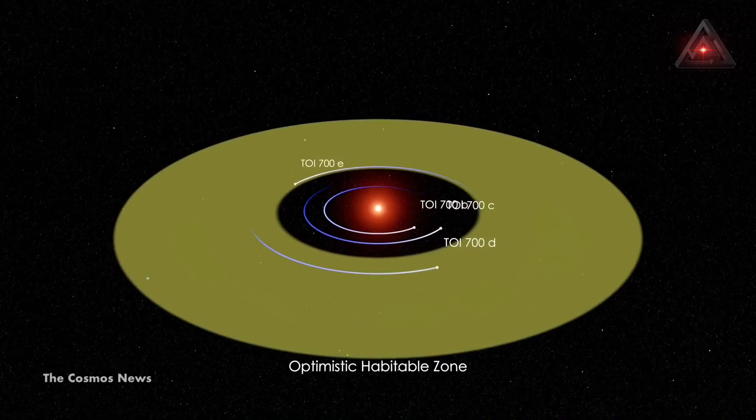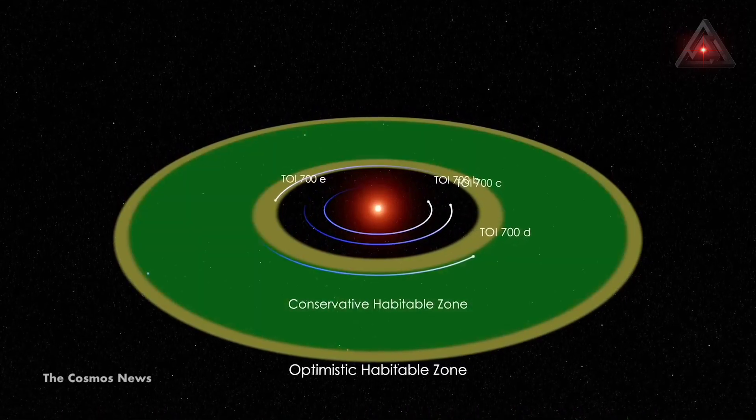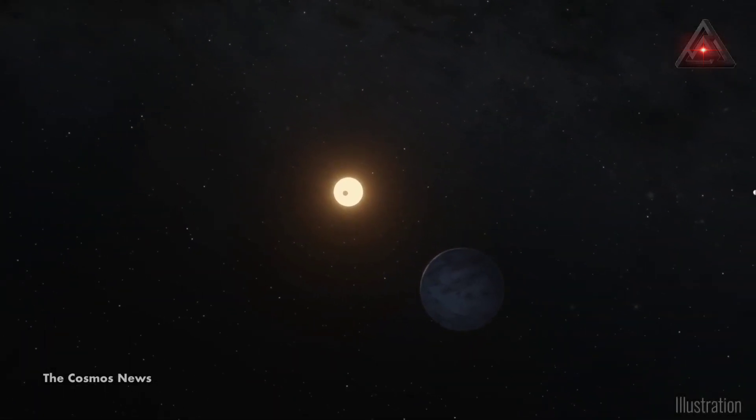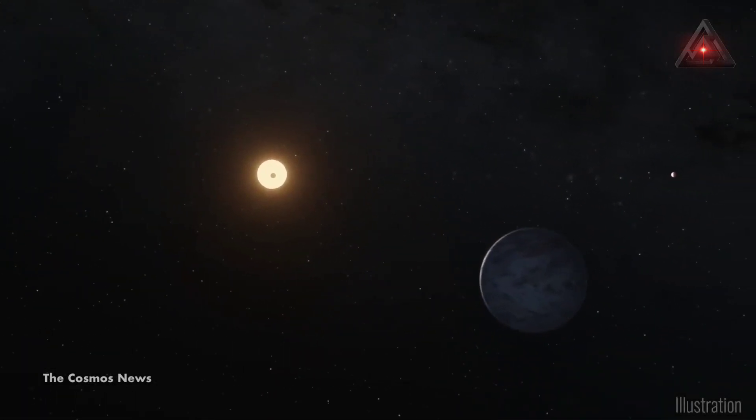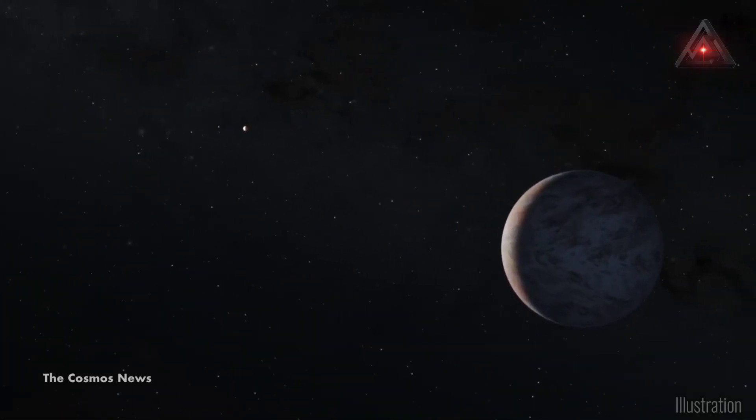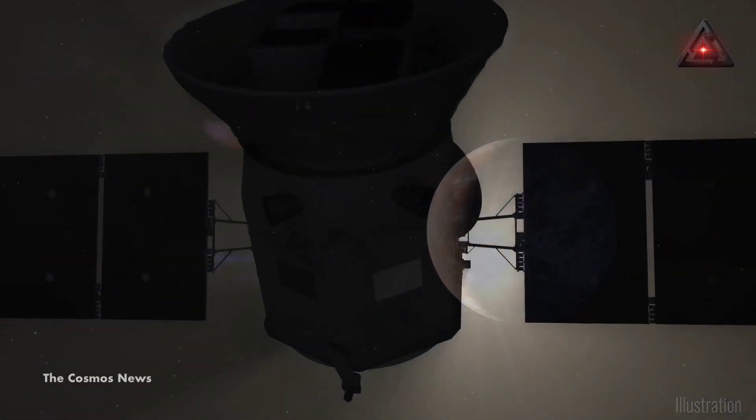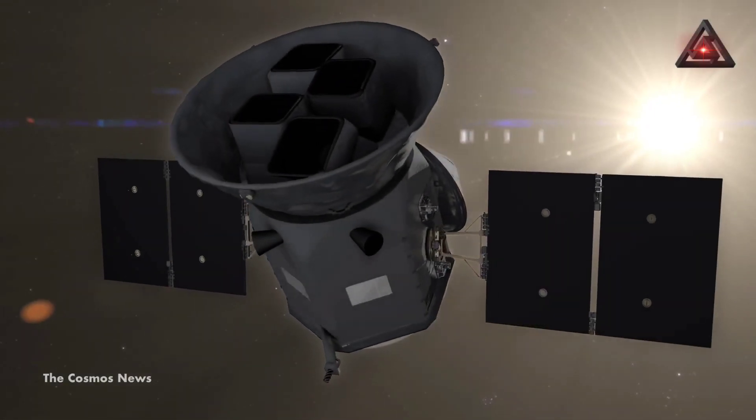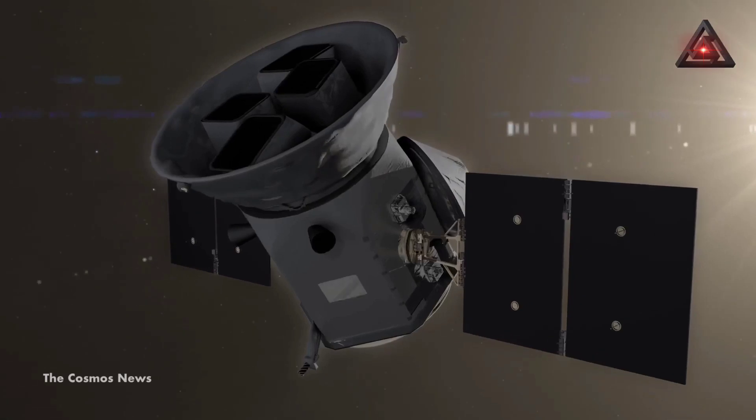This is one of only a few systems with multiple small habitable zone planets that we know of. That makes the TOI-700 system an exciting prospect for additional follow-up. Planet E is about 10% smaller than Planet D, so the system also shows how additional TESS observations help us find smaller and smaller worlds.